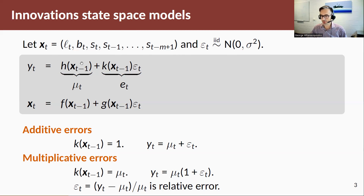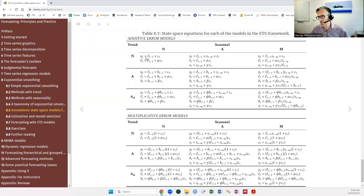Having stacked all the states, we can write all the models in a very general form. In the observation equation, the actual observation is a function of our states plus another function interacted with our errors. Each state equation is a function of previous states plus another function interacted with innovation errors. If you go back to look at the equations for these models, you'll see this general form captures each and every one of them.